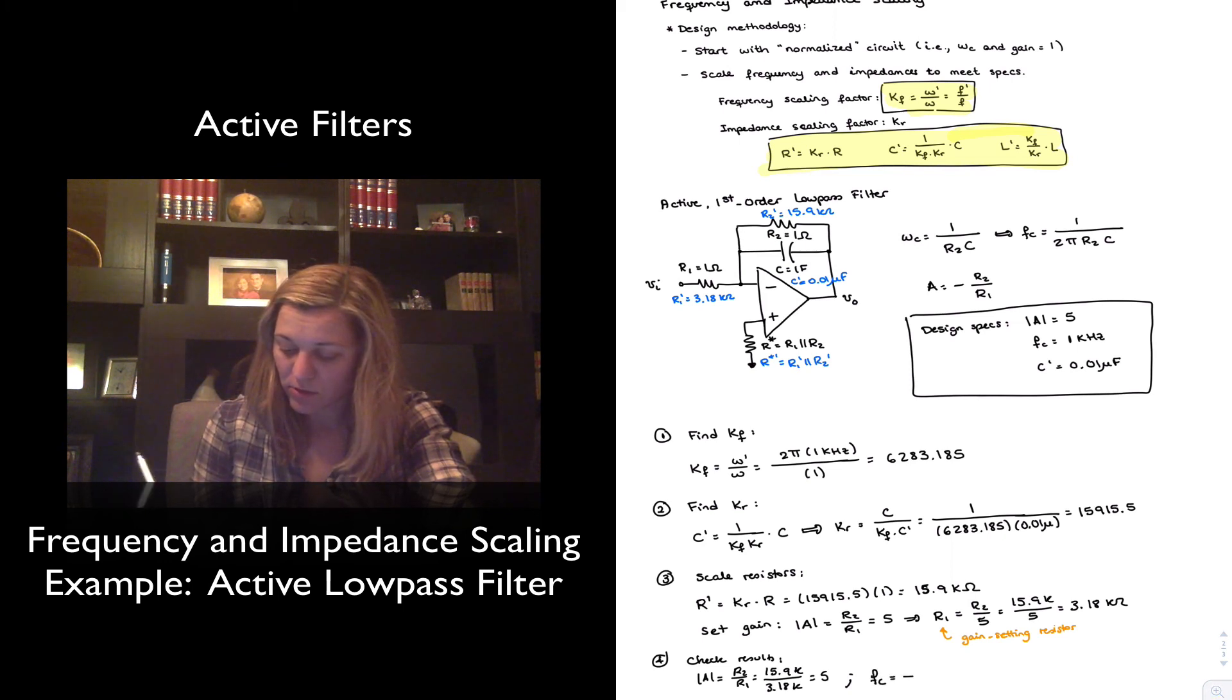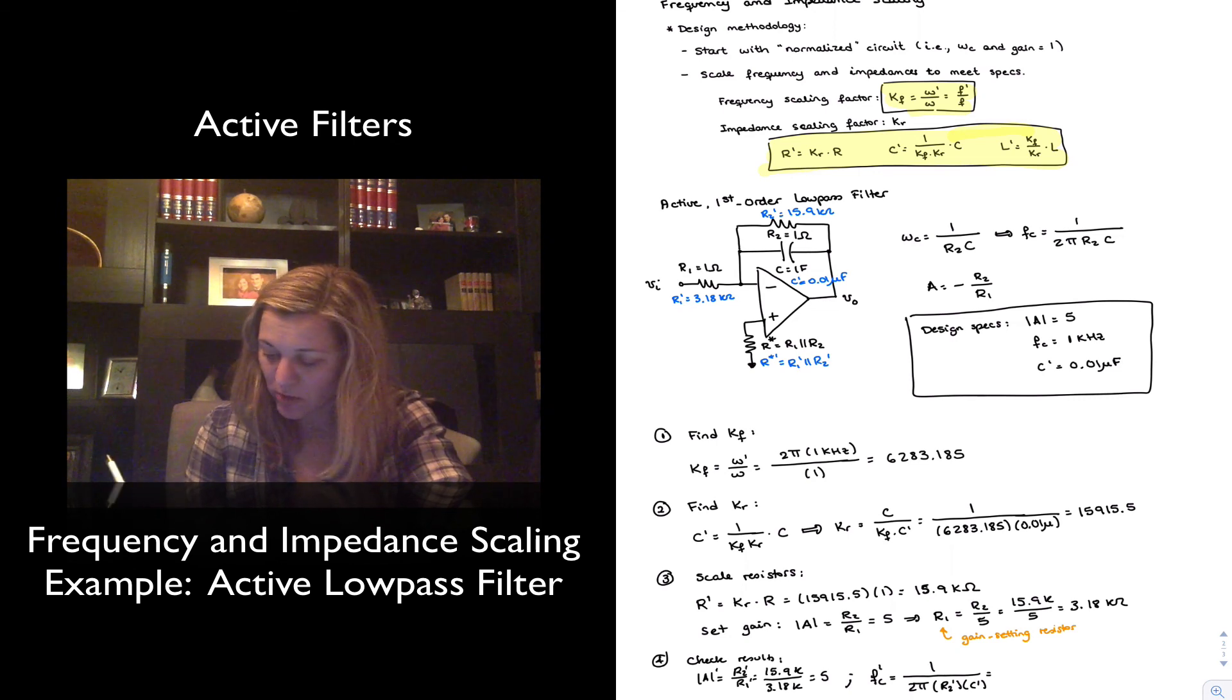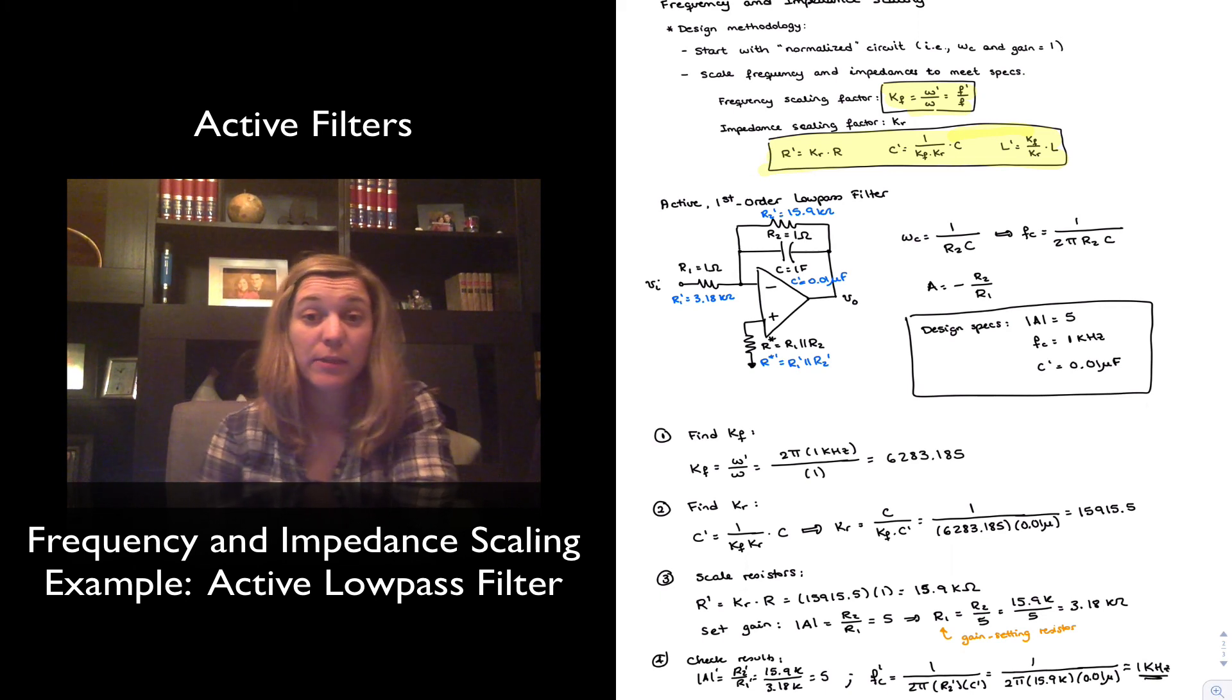And then my cutoff frequency, FC, is going to be equal to 1 over 2π R2 prime times C prime. So 1 divided by 2π, 15.9 K, times 0.01 micro. And this is approximately equal to 1 kHz. So everything checks, and my circuit has been designed.